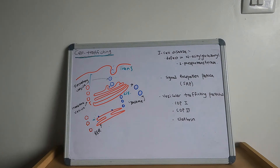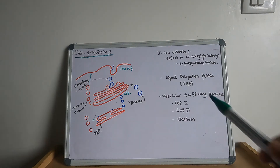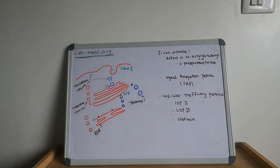Post-translational events in the Golgi include modifying N-linked oligosaccharides on asparagine, adding O-linked oligosaccharides on serine and threonine, and adding mannose-6-phosphate to proteins destined for lysosomal trafficking.